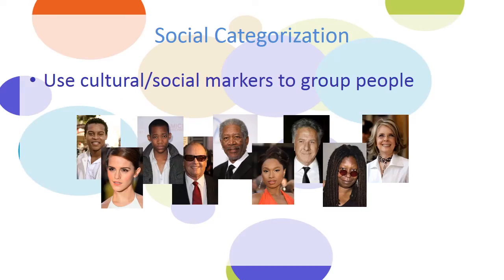Social categorization is when people use cultural or social markers to group people. This is a group of famous actors, and we could categorize them in multiple different ways.